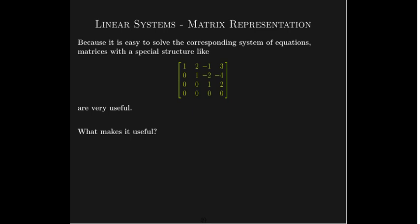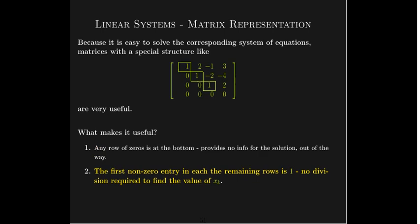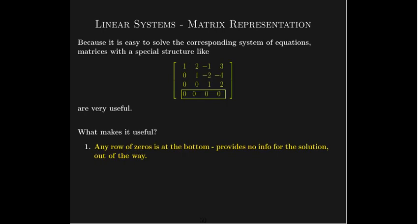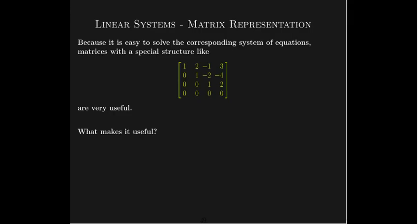We saw that if we had an augmented matrix with this special structure, it was very easy to solve the corresponding system. What made it so easy? Any row of all zeros was at the bottom — it's not contributing to the value of any of the variables; it's out of the way. Then the first non-zero entry in each row is a 1, and if we go back and look at our solution steps, there was no division required because we just had 1·x2, 1·x1, 1·x3.